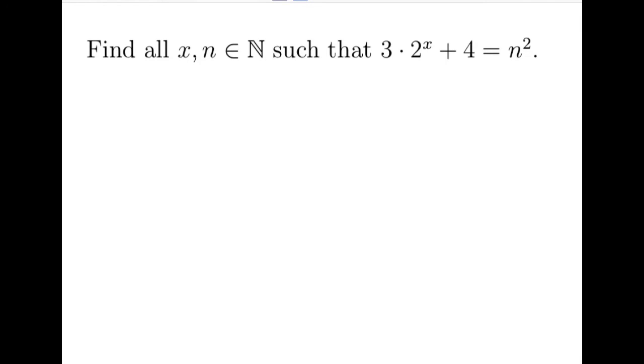Hi, let's take a look at this problem taken from the team selection test for the Greek national team to take part in the Junior Balkan Mathematical Olympiad 2019. It says find all natural numbers x and n such that 3 times 2 to the x plus 4 equals n squared.